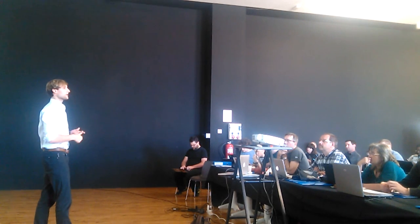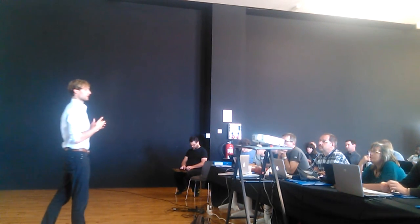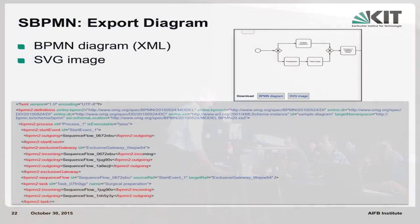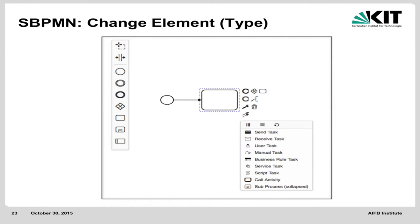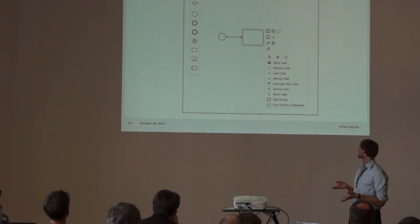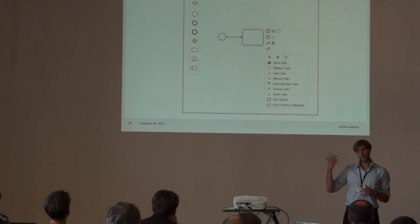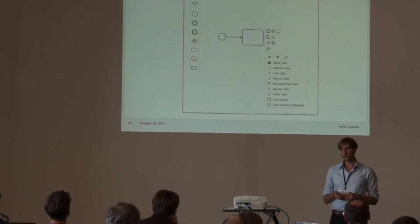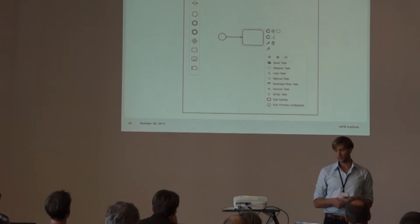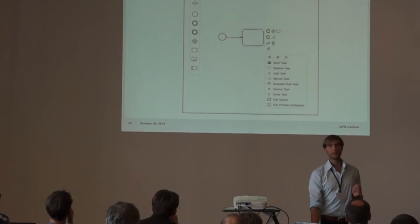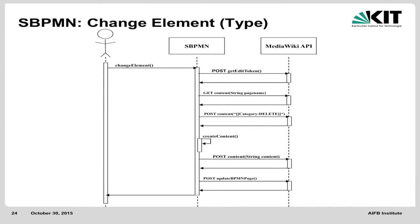You can create new elements, upload existing ones, and export them. You can also change elements — if you want to change an element, you click on it and can select another element type. We support 46 BPMN elements like user tasks, manual tasks, and so on. You can make them recursive, and we have exclusive gateways, inclusive gateways, and so on. In the background, if you change the type, we delete the page rather than changing it.